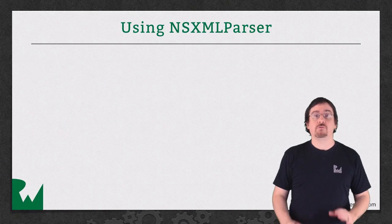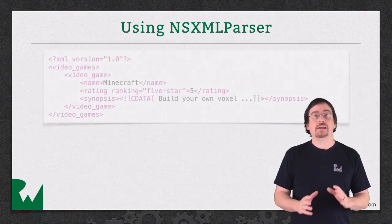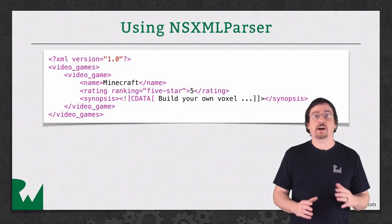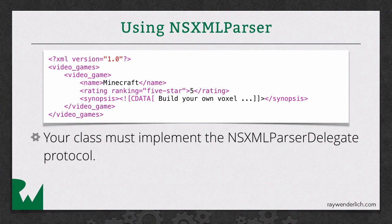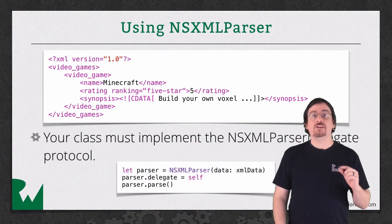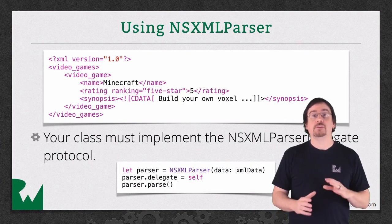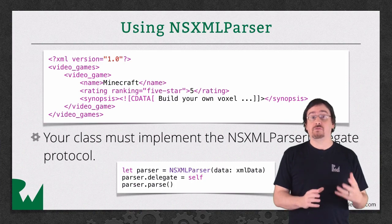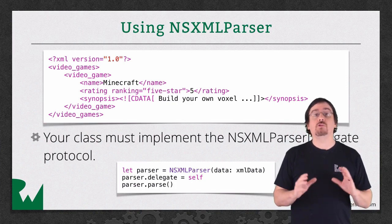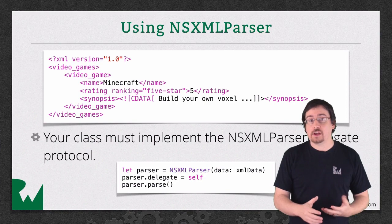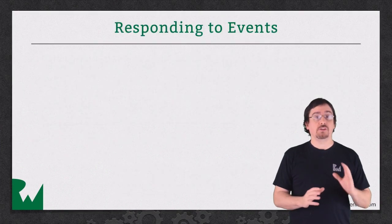Using NSXMLParser first requires you to have a valid XML file. In this case, I have a valid XML file that contains a video game. If I wanted to parse this document, I would first need to create an object that adheres to NSXMLParser's delegate. Unfortunately, this object must be a type of NSObject. Once you have your parser delegate, you'll create a new NSXMLParser passing in an XML file. The initializer takes the XML as a converted NSData. Finally, you call the parse function to start the parsing process, at which point you'll start receiving events.